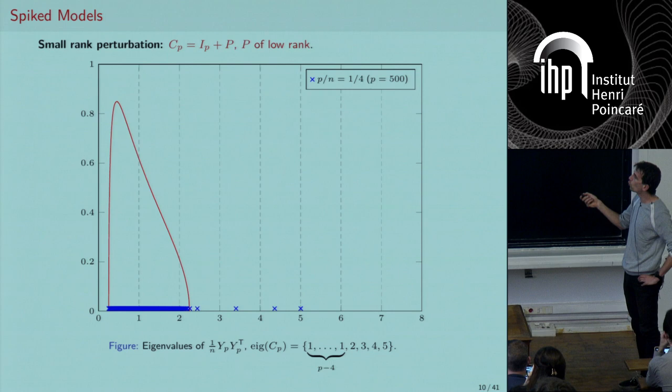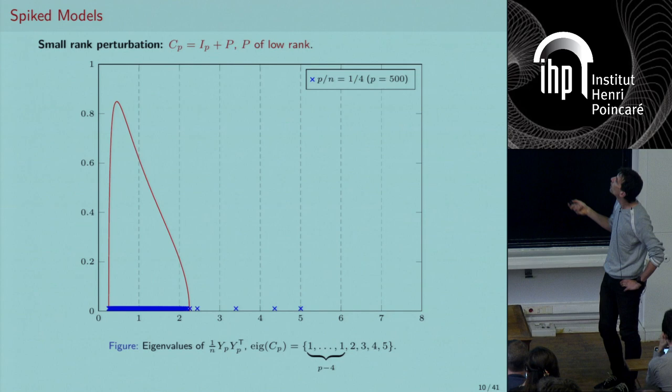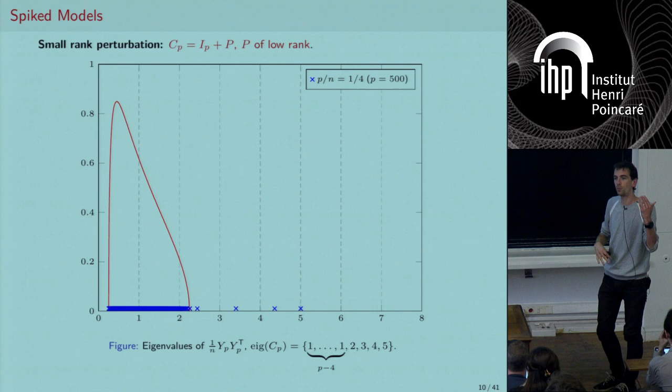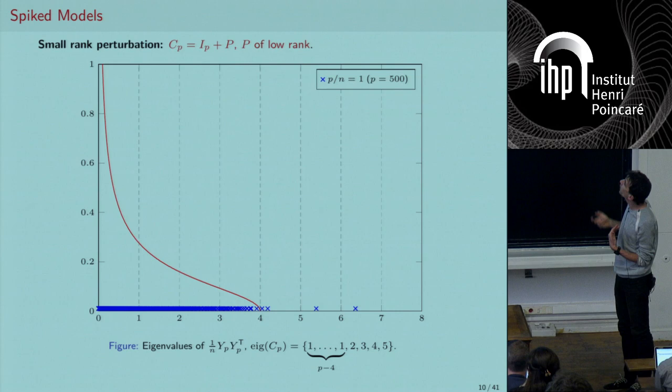Here's an example where the true population eigenvalues are all equal to 1 except the last four, which equal 2, 3, 4, 5. Indeed, we see four eigenvalues of Ĉ_p getting outside the support — not exactly 2, 3, 4, 5 but still visible. This is for p/n = 1/4. If I increase p/n to 1/2, only three eigenvalues are visible outside.